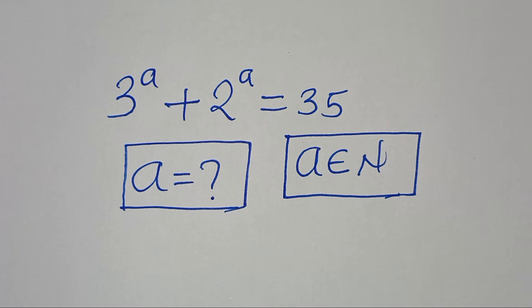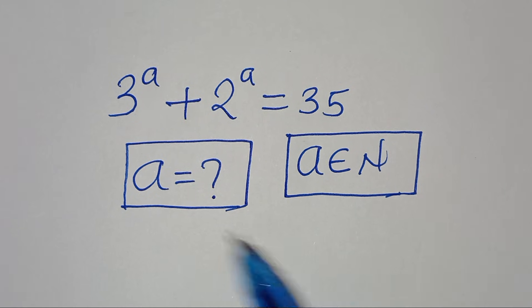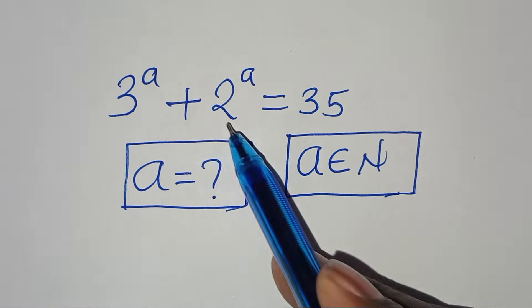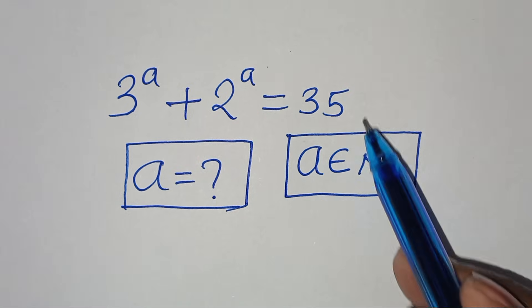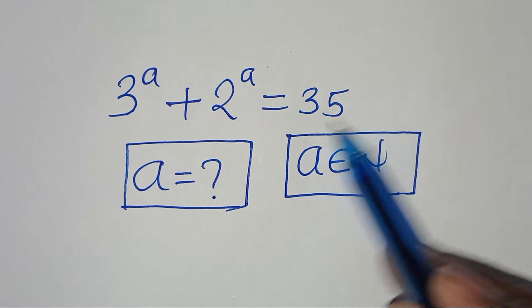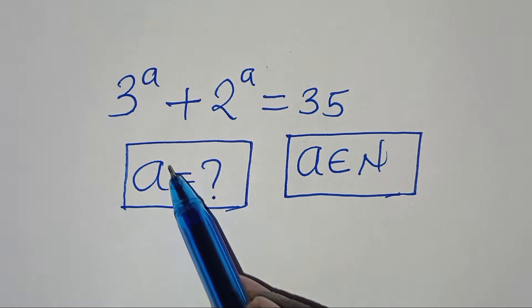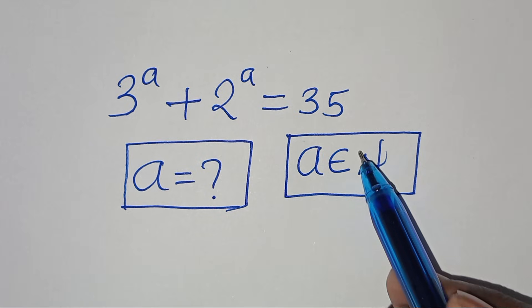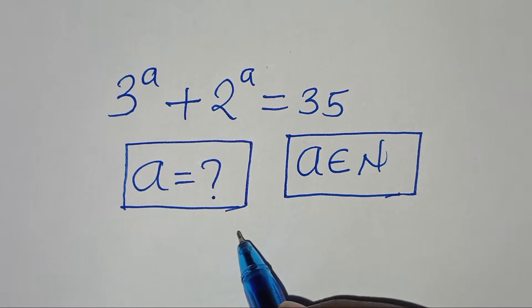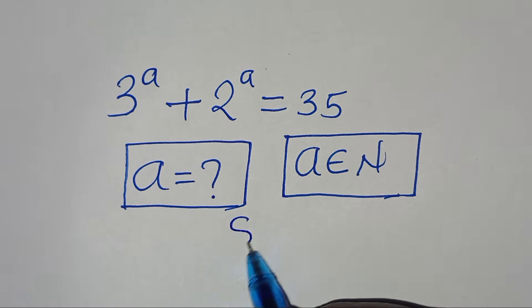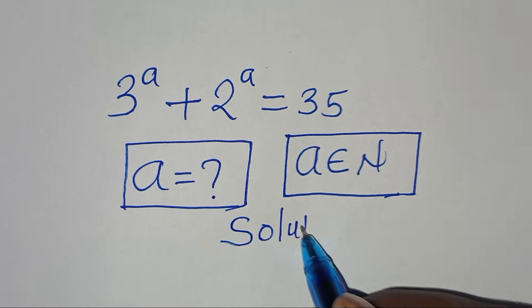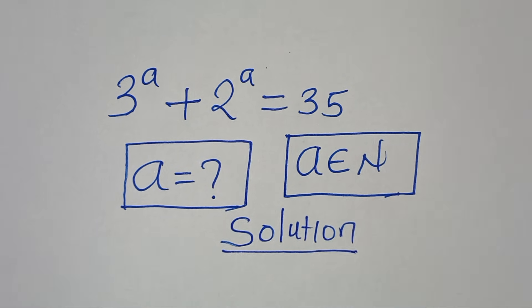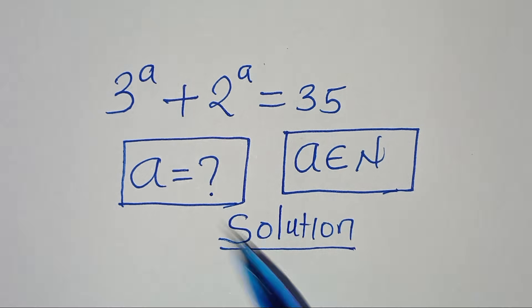Hello everyone, you're welcome to solve this nice algebra problem: 3 to the power of a plus 2 to the power of a is equal to 35. What is the value of a, given that a is an element of the natural numbers? Let's provide a solution.